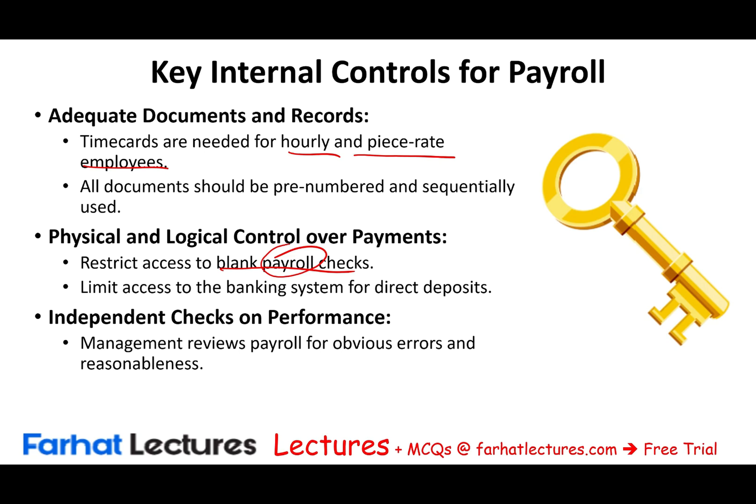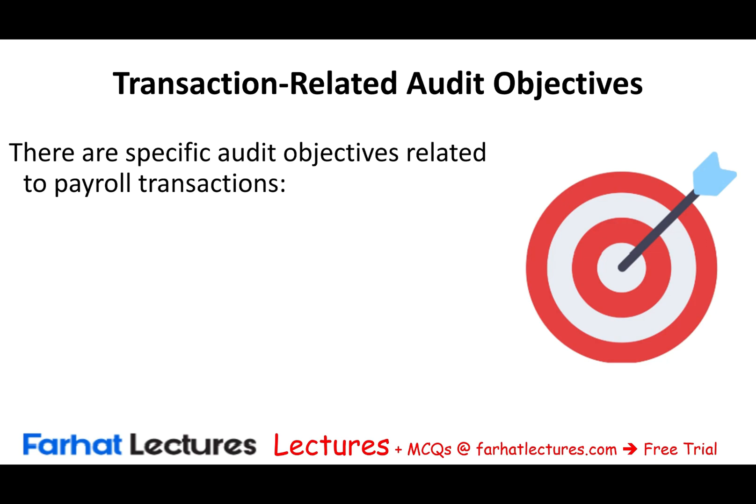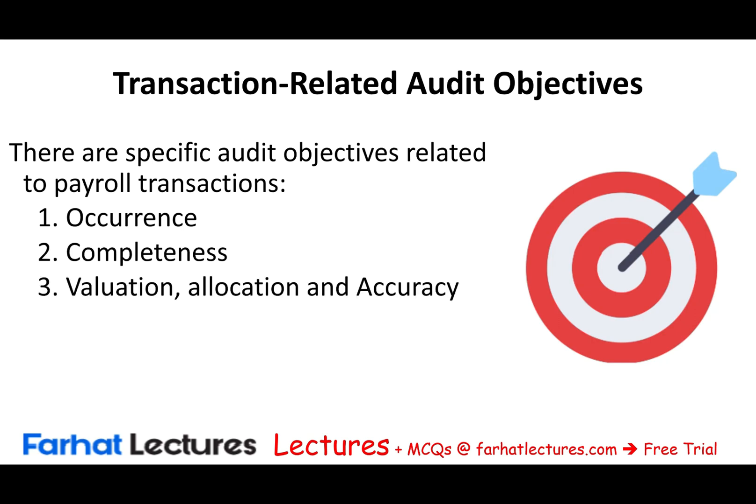Now we look at transaction-related objectives for payroll. There are specific audit objectives related to payroll transactions. In this session we will look at the objective, its internal control, how to test the control, and how to perform substantive testing — all together. We will cover occurrence, completeness, valuation, allocation, and accuracy. Let's start with occurrence.